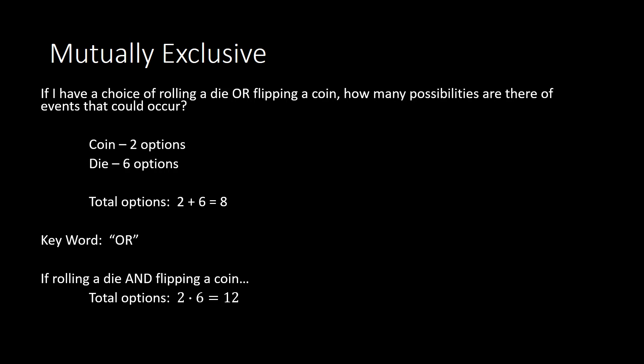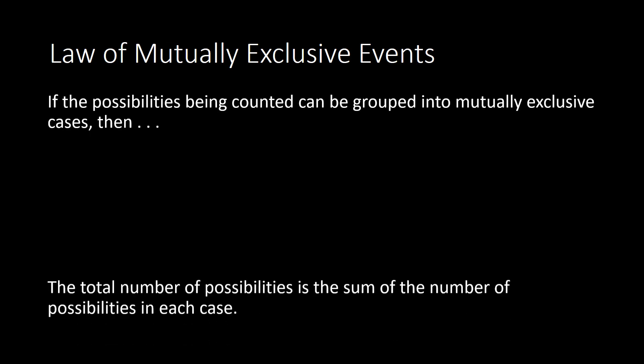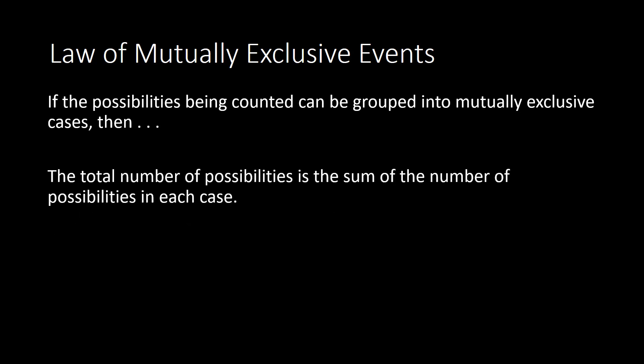The key word for mutually exclusive is OR, and with OR we add. If it's not mutually exclusive — meaning you can have both at the same time — the key word is AND, and with AND statements you multiply. This is called the Law of Mutually Exclusive Events, which says that if the possibilities can be grouped into mutually exclusive cases, the total possibilities is the sum of the number of possibilities in each case.